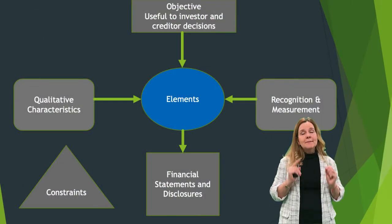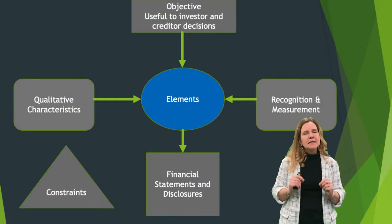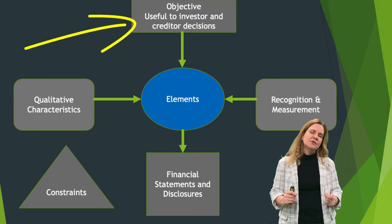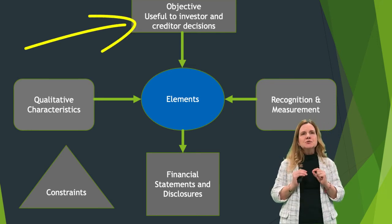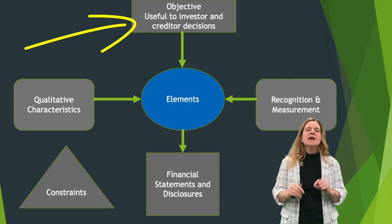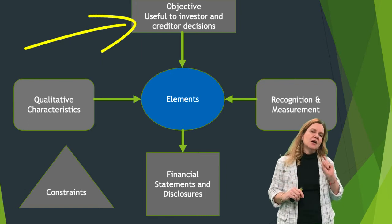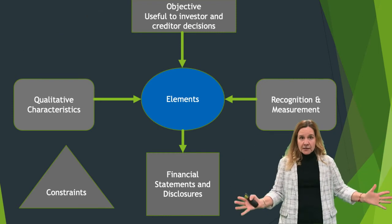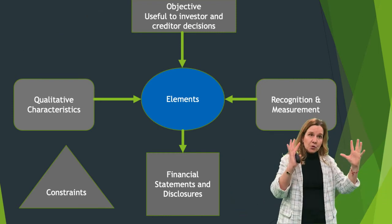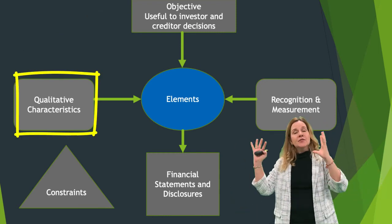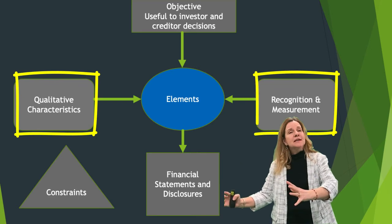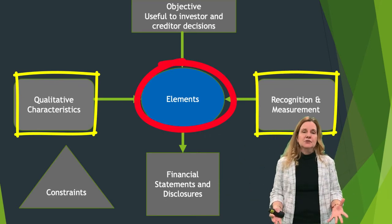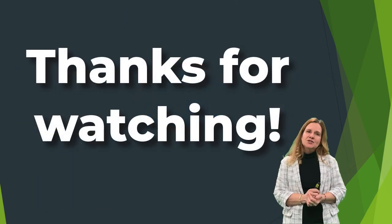To summarize, the main objective of the conceptual framework is that the information we disclose and the financial statements must be useful to decision makers, with a focus on investors and creditors. Our overlying criteria are the qualitative characteristics and the recognition and measurement of the elements that go into the financial statements and disclosures. Thank you very much for watching.